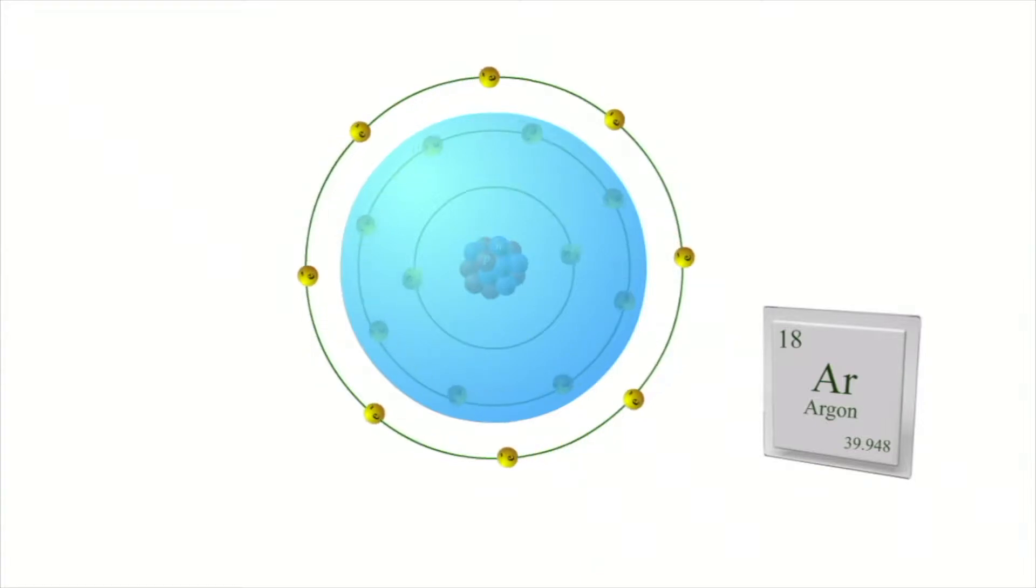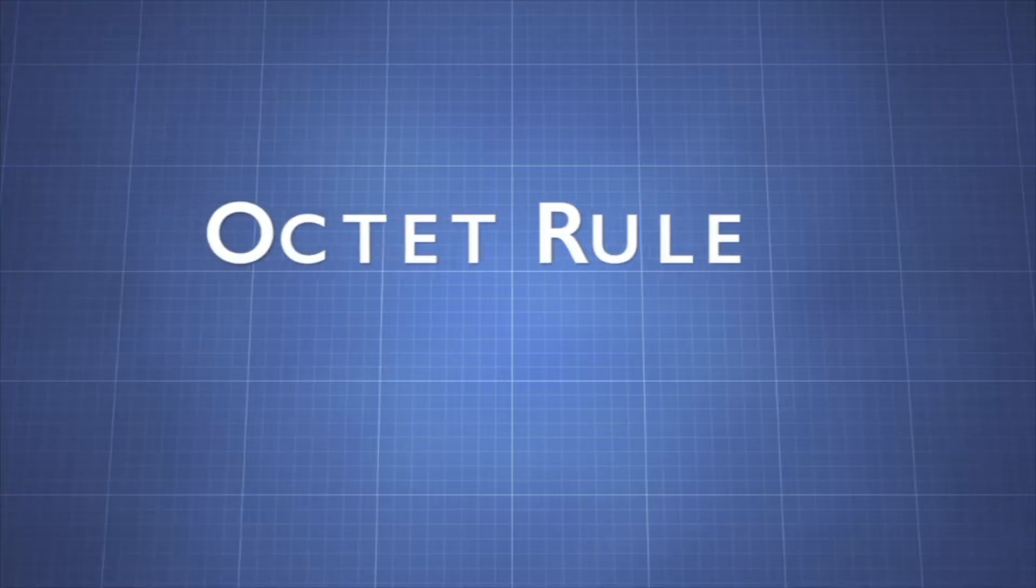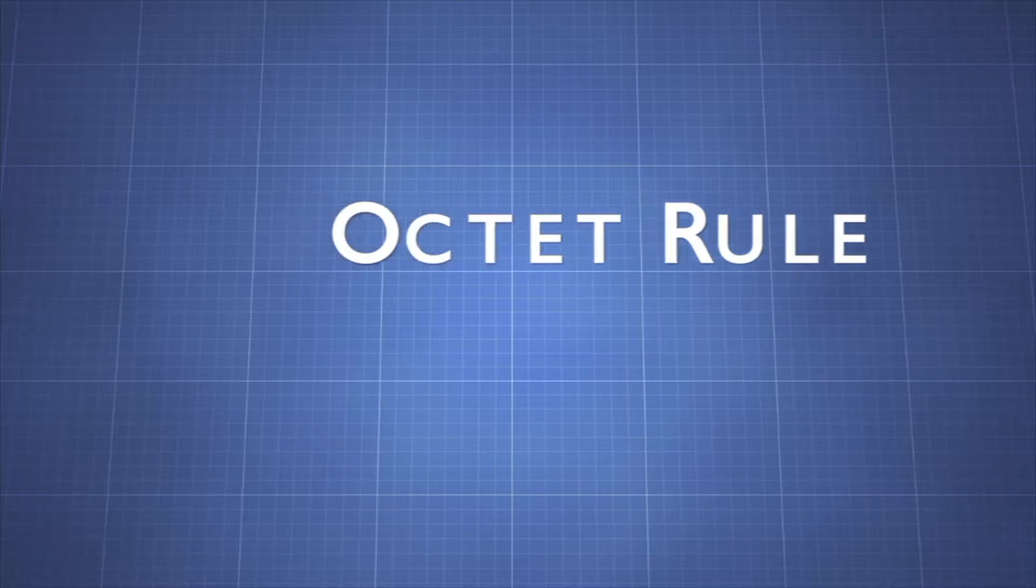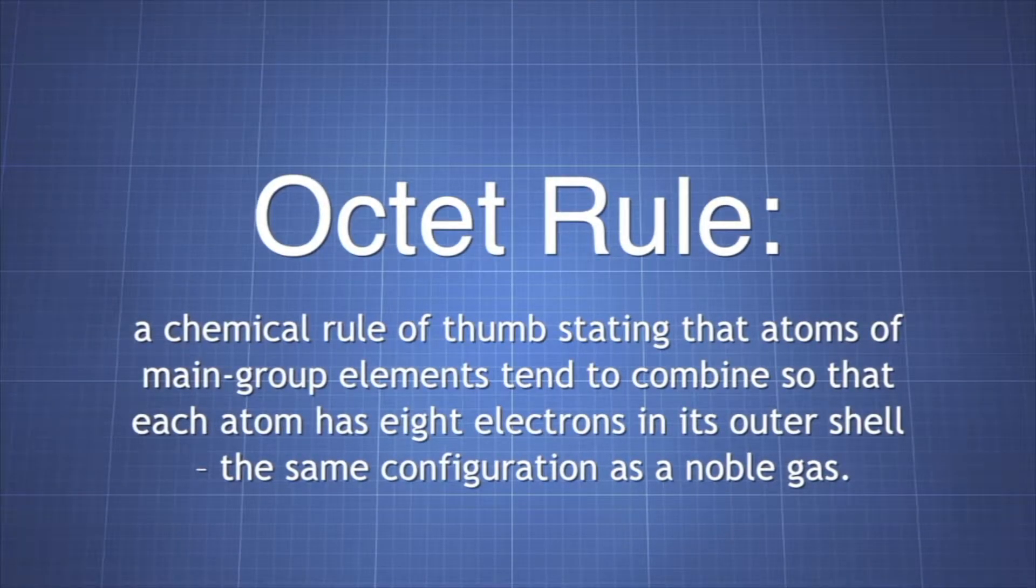This number of electrons in a stable outer shell leads to the octet rule. The octet rule is a chemical rule of thumb, so it doesn't always apply.